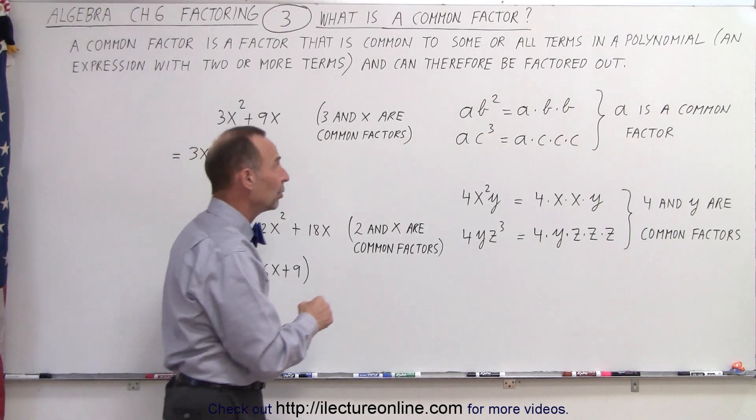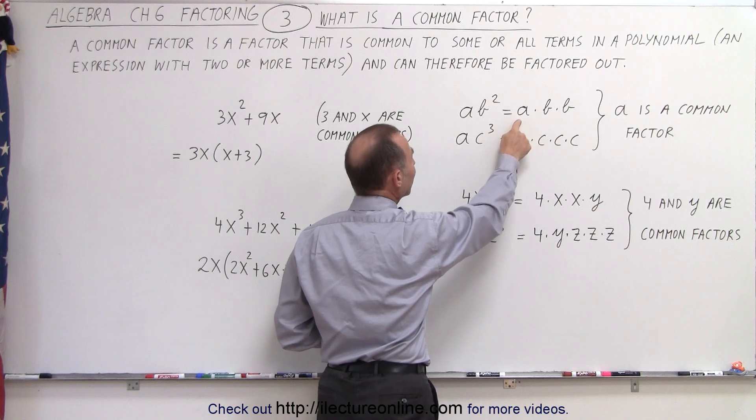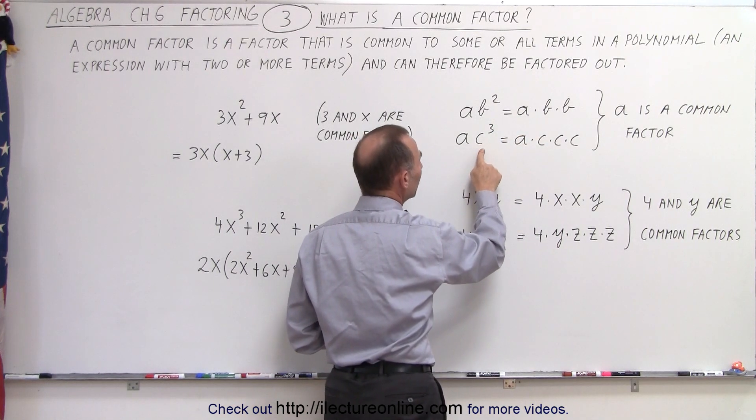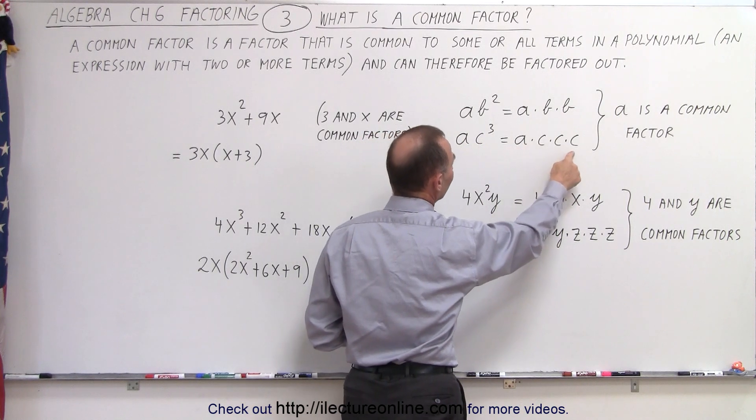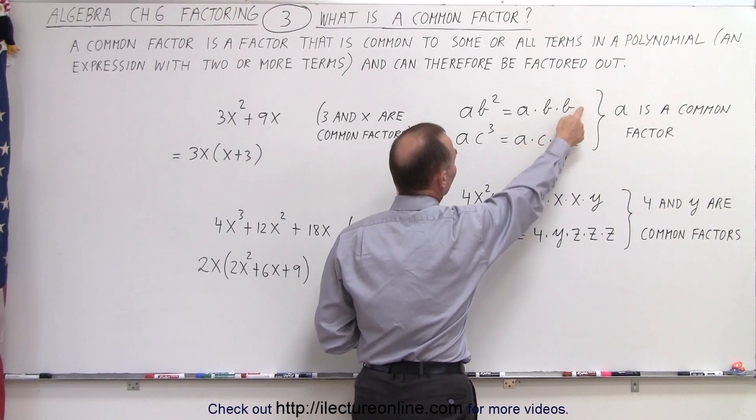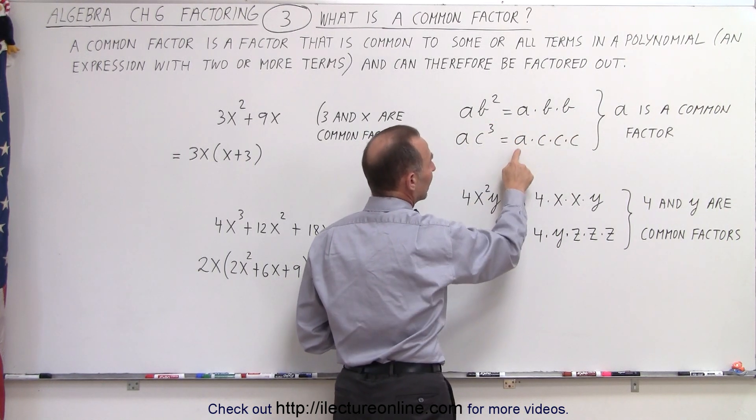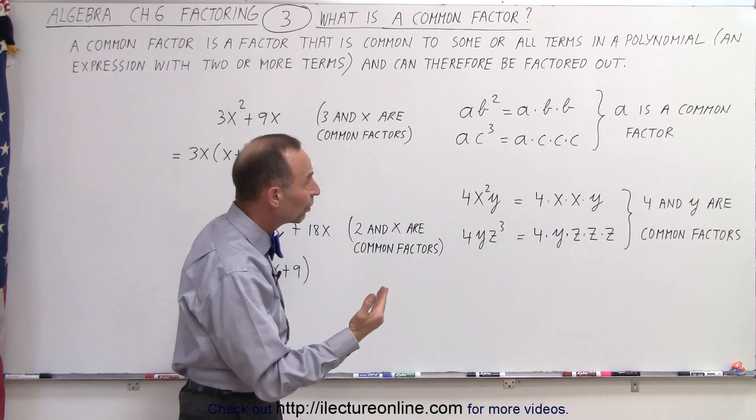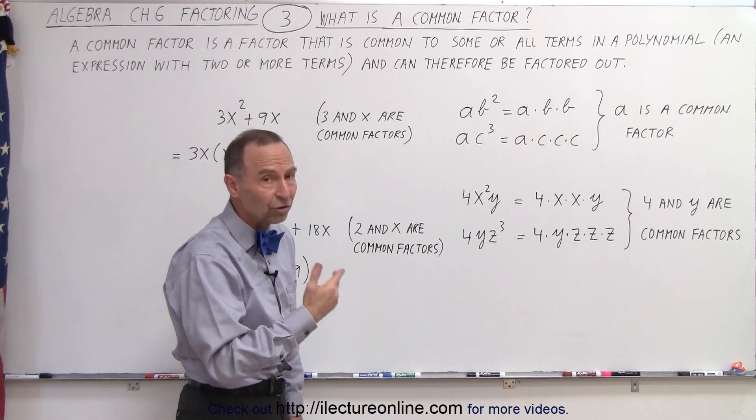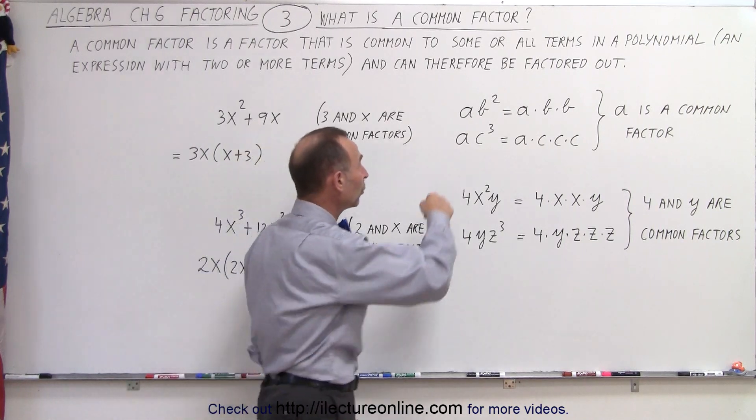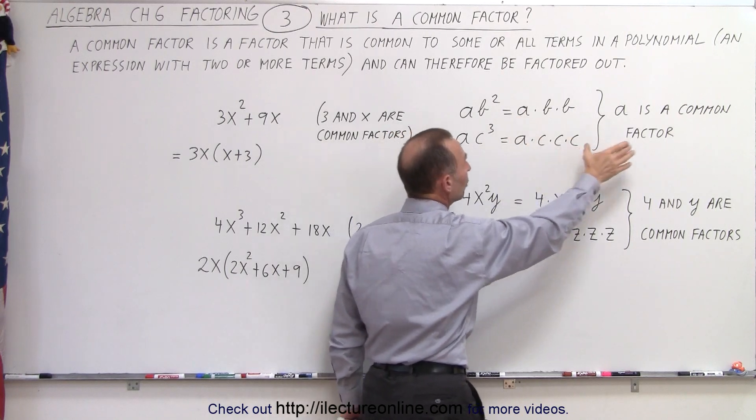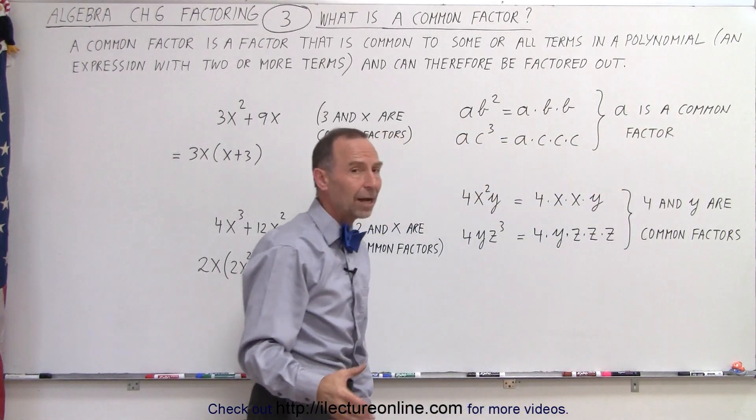Here we have ab², which can be written as a times b times b, and ac³, which can be written as a times c times c times c. Notice a, b, and b are factors of ab², and a, c, c, c are factors of ac³. Both contain factor a, which is common to both. So both expressions have the common factor a.